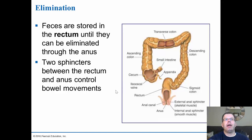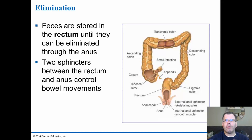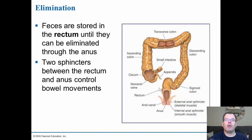In the elimination stage, feces travel to the rectum — the storage site — until ready to be eliminated. Two sphincters, the internal and external anal sphincters, control the elimination of feces by relaxing when it's time to eliminate. Sometimes elimination is blocked when there isn't enough fiber or water in the system, causing constipation.